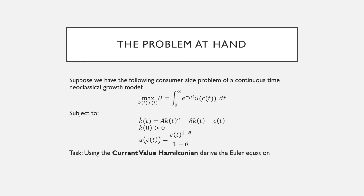So this is our example one. We're going to suppose we have the following continuous time growth problem in a Ramsey-Kass-Koopmans setup.